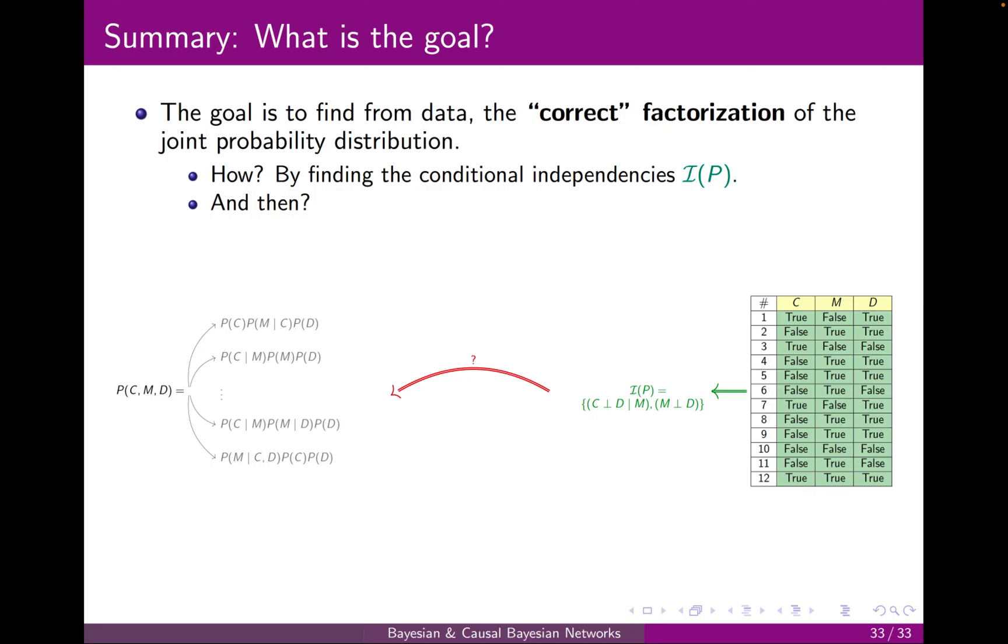Now, to summarize, recall that our goal was to find the joint probability distribution based on the table. More specifically, we want to find a factorization. How does this joint distribution factorize? We said for that, we assume that we are given the conditional independencies. And we said, what then? We are not going to answer this question yet, but what we did was that we said we can at least use some graphical visualization, which is the Bayesian network.